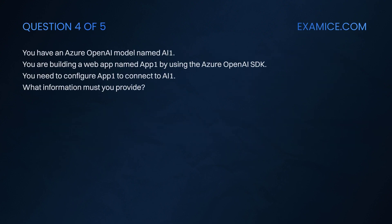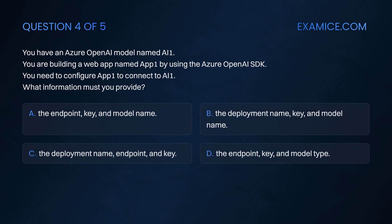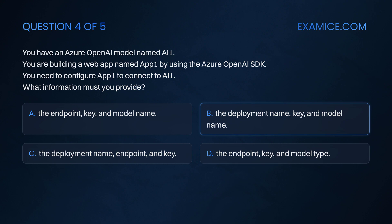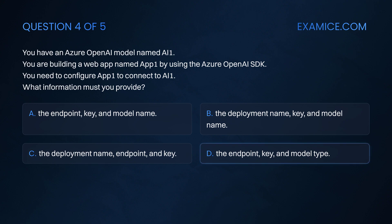Question 4. You have an Azure OpenAI model named AI1. You are building a web app named App1 by using the Azure OpenAI SDK. You need to configure App1 to connect to AI1. What information must you provide? Option A: The endpoint, key, and model name. Option B: The deployment name, key, and model name. Option C: The deployment name, endpoint, and key. Option D: The endpoint, key, and model type.